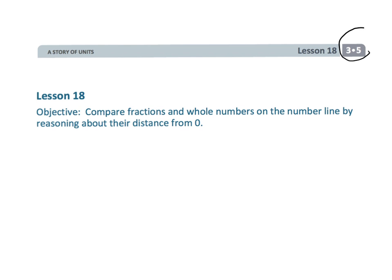All right, this is Grade 3 Module 5 Lesson 18. In this lesson we're going to be comparing fractions and whole numbers on the number line by reasoning about their distance from zero.